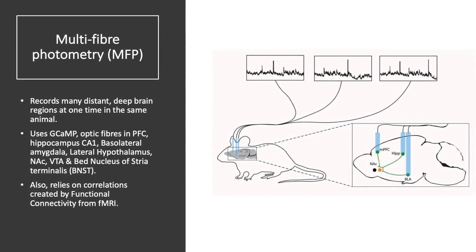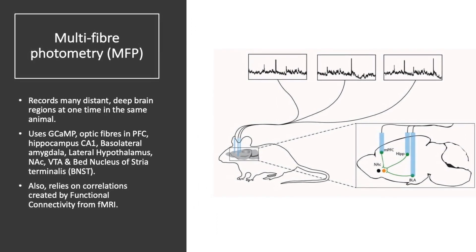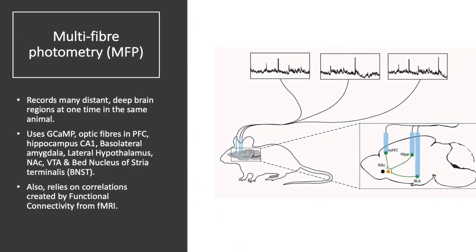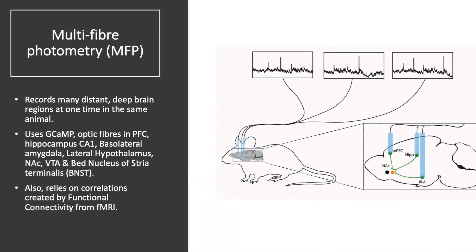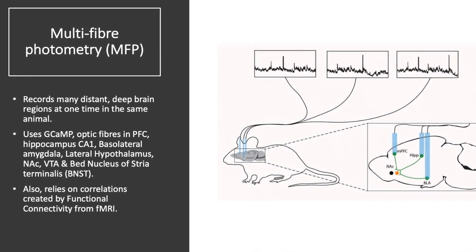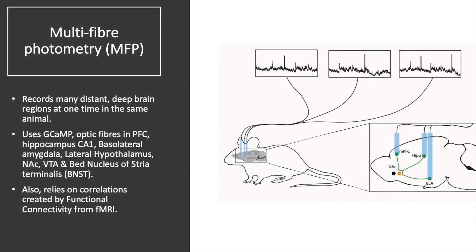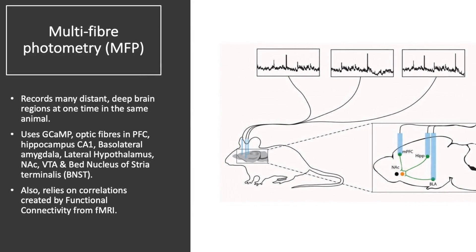Multi-fiber photometry also relies on correlations created by functional connectivity. Multi-fiber photometry measures multiple areas and relies on fMRI correlations in order to pinpoint where certain parts of the brain light up and are influenced by perception and thus influence behavior. This allows for deeper analysis of brain structures.